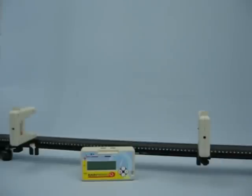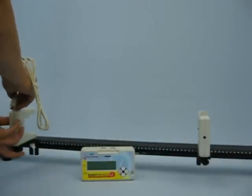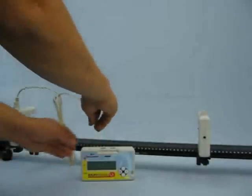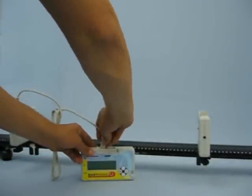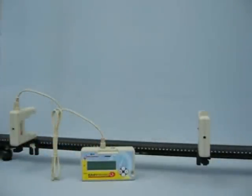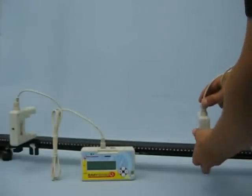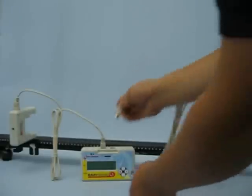Connect the light gate at the 90cm mark to input A on the interface, and connect the light gate at the 40cm mark to input B on the interface.